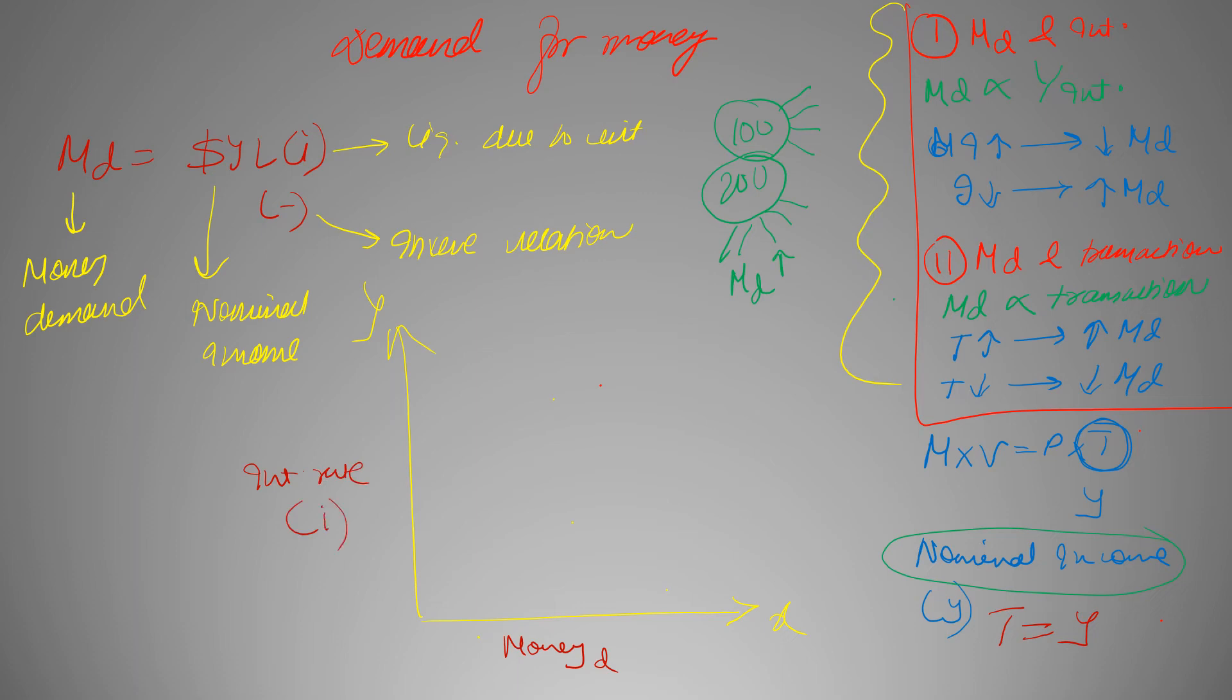Now we know that money demand and interest have a negative relation. So our graph goes pretty much like this, it's a downward sloping graph because of the negative relation. Now we can see that at this level say I, our money demand is M. And as we decrease our interest rate, we see that money demand increases.